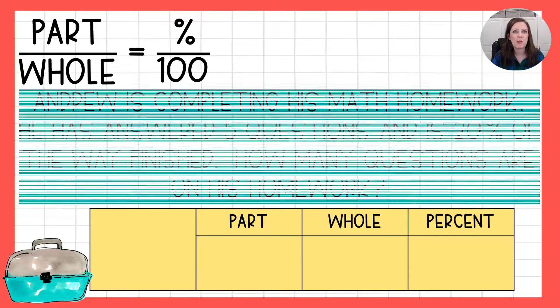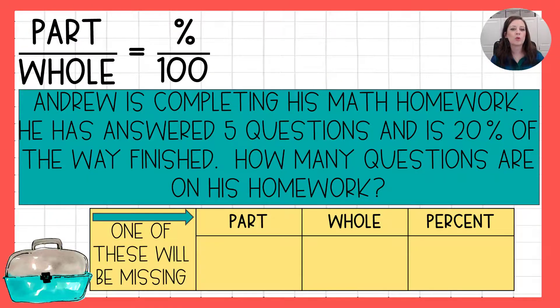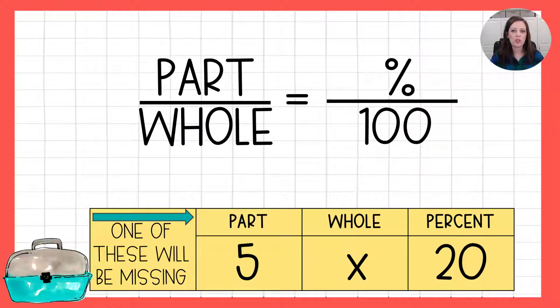Let's take a peek at another one. Here Andrew is completing his math homework. He has answered five questions. He is 20% of the way finished. How many questions are on his homework? So essentially the exact same question except that it's homework instead of a test. Remember something will be missing. The part: he has answered five questions. The whole, we don't know how many questions are on his homework, but we do know that he has finished 20%. So now we're going to take that information and plug it back into our proportion.